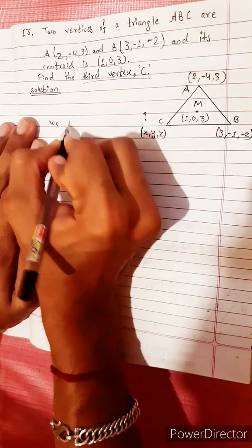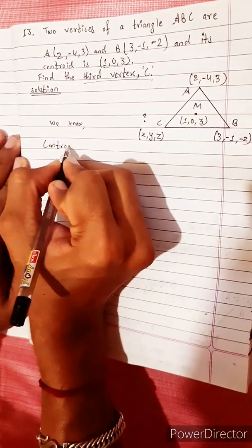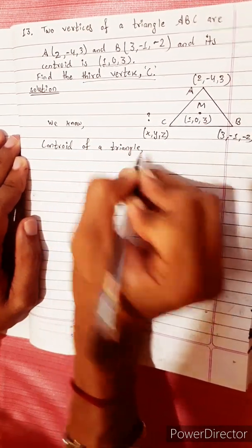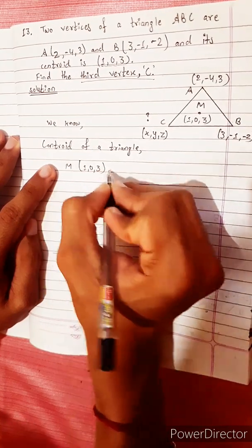Now we know the centroid of a triangle formula: M(1, 0, 3) equals...